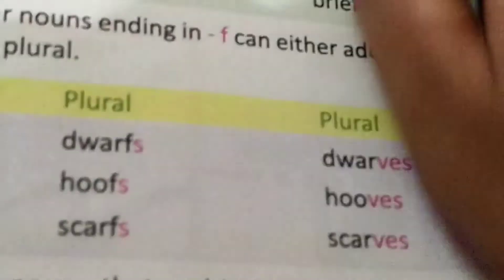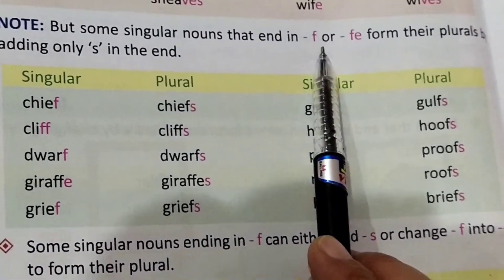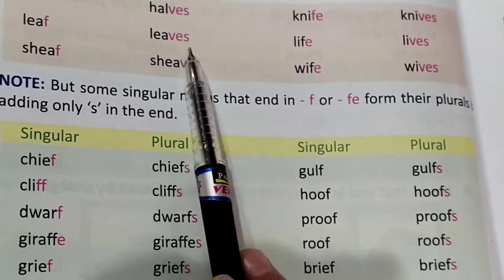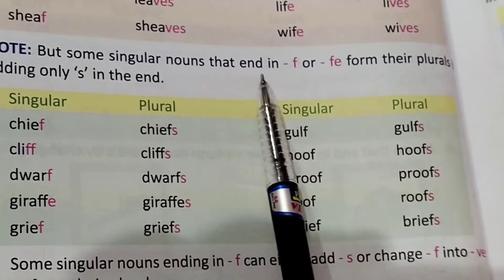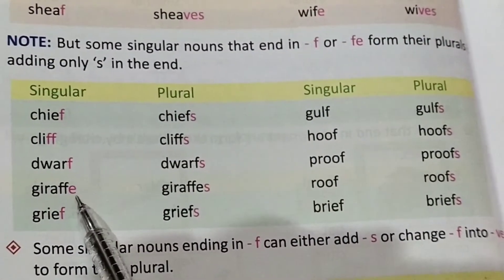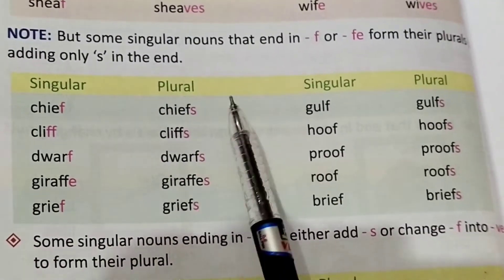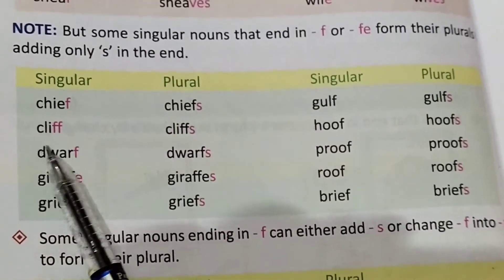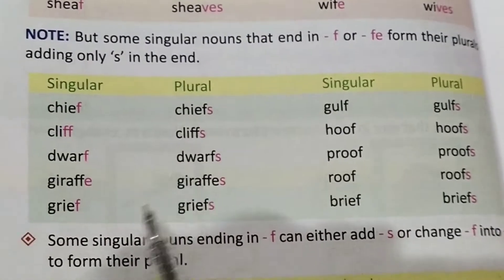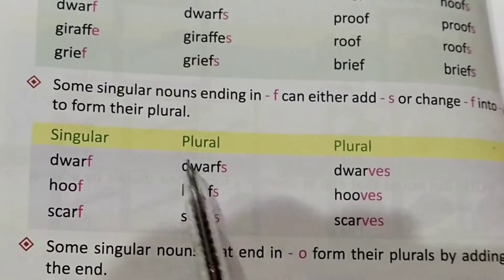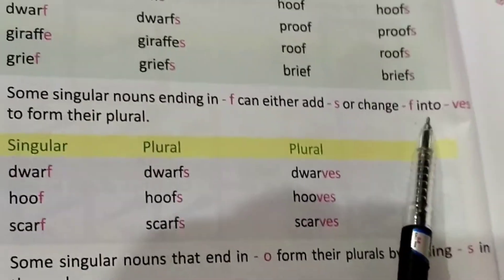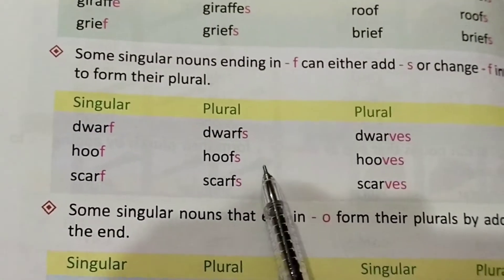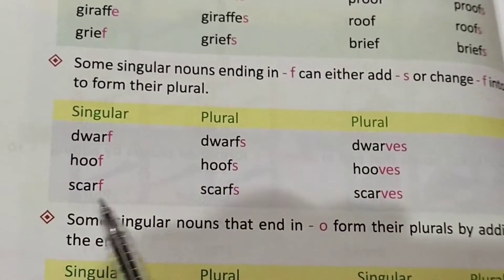You can take help from your book for this. One more rule: some singular nouns ending in -f or -fe form their plural by simply adding -s at the end. For example: cliff → cliffs, dwarf → dwarfs, grief → griefs. And some words ending in -f can form their plural in two ways.